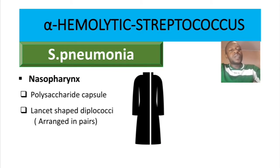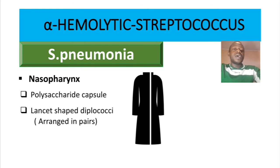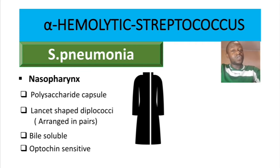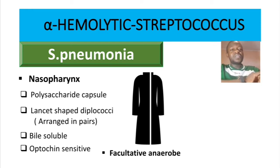To differentiate Streptococcus pneumoniae from viridans streptococci, as you'll see at the end of this video: Streptococcus pneumoniae is bile-soluble, meaning it cannot grow in bile. It is also optochin-sensitive — sensitive to the drug called optochin. As an additional point, Streptococcus pneumoniae is a facultative anaerobe.